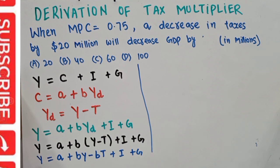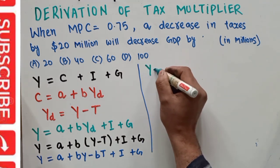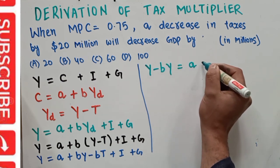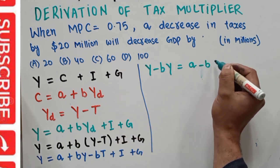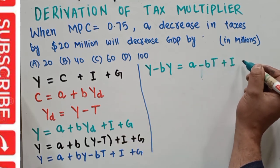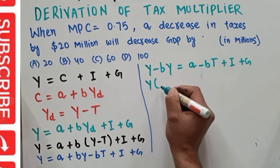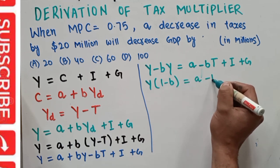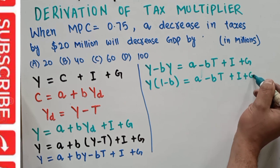Now we transpose bY to the left-hand side, so we get Y − bY = a − bT + I + G. Taking Y as common on the left side, we are left with Y(1 − b) = a − bT + I + G.